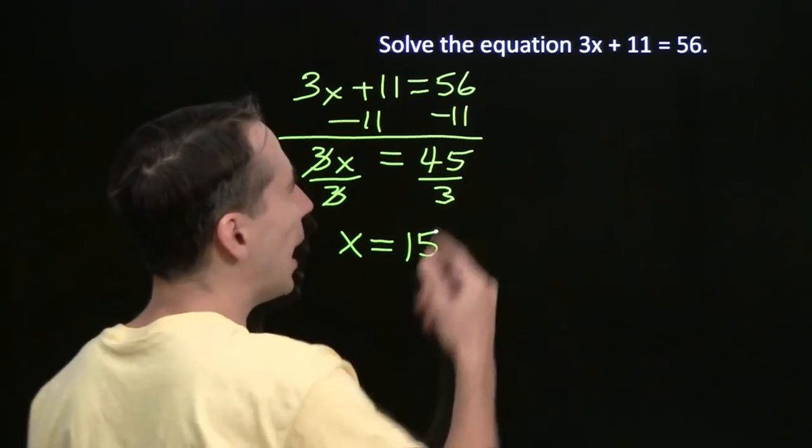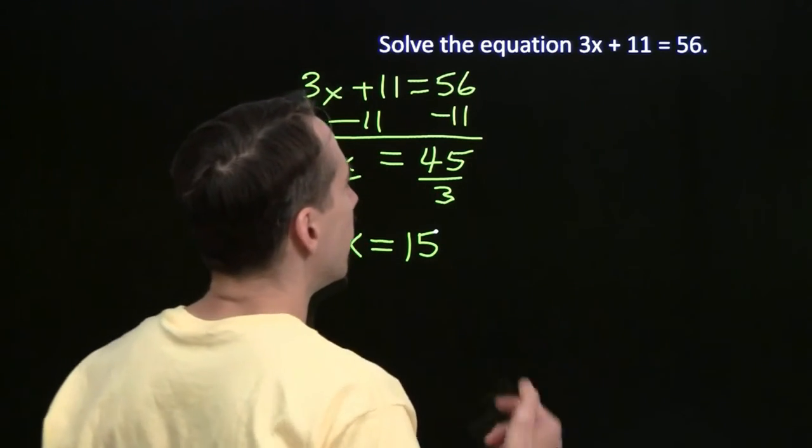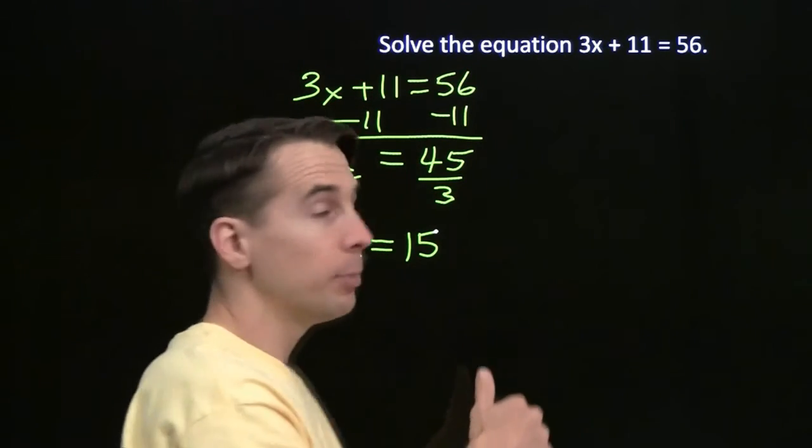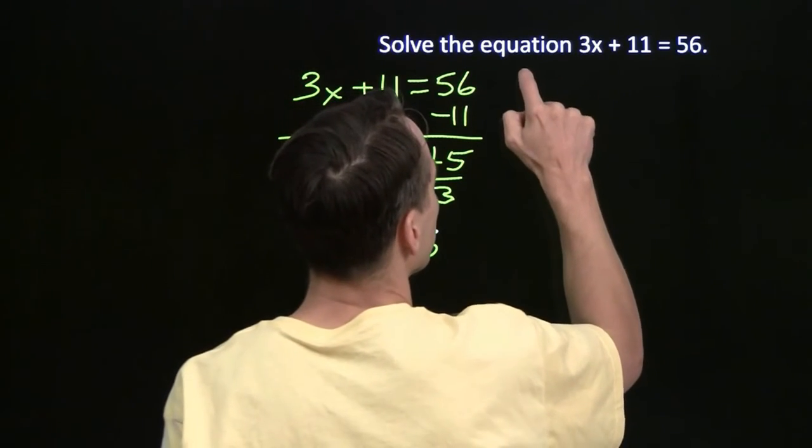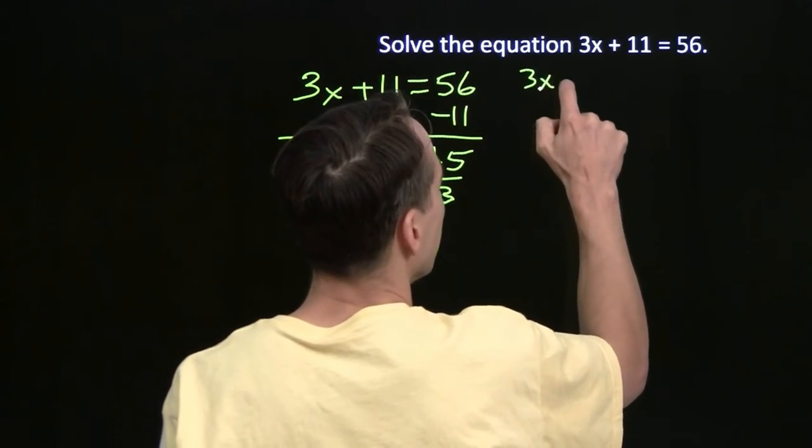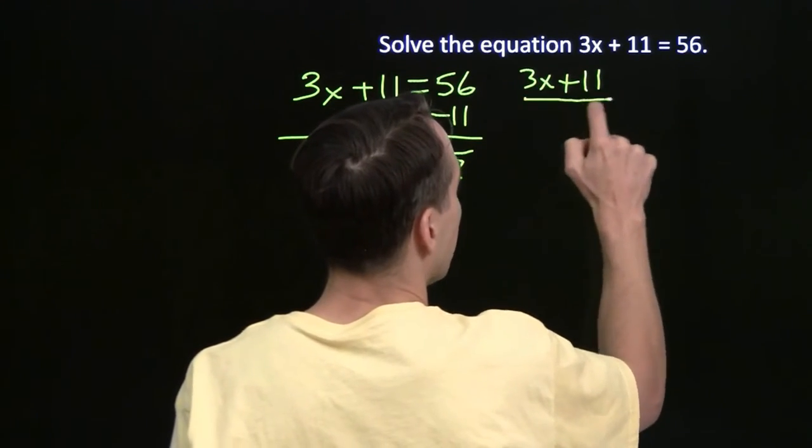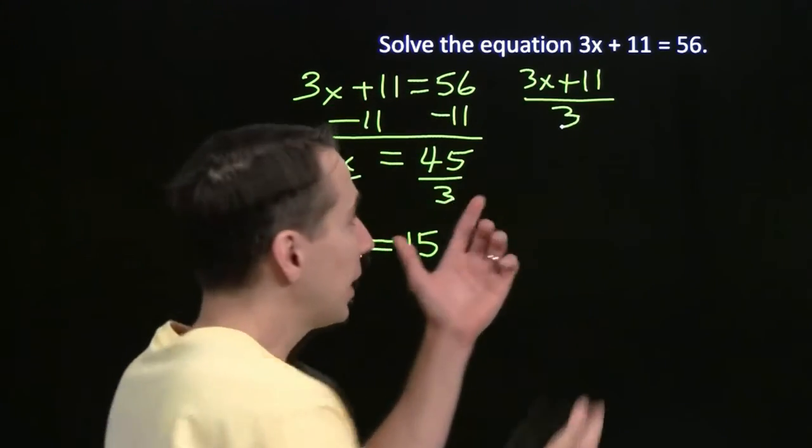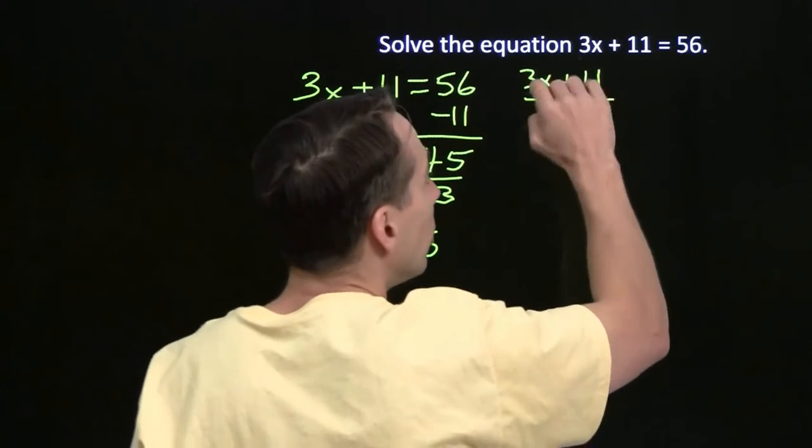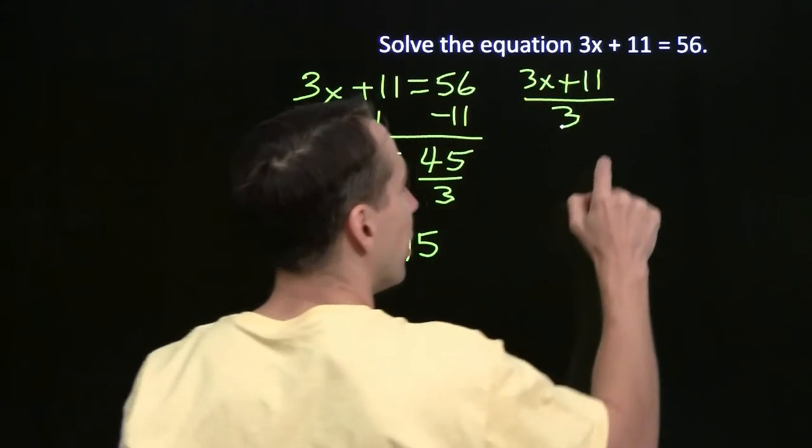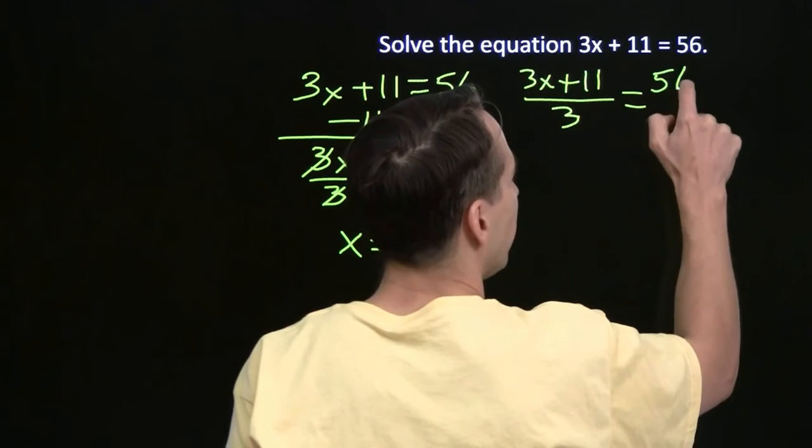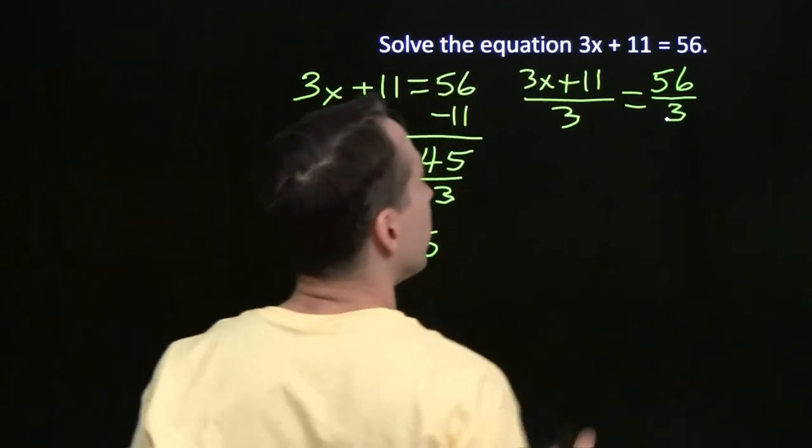Now, what would have happened if we'd gotten rid of the 3 first? Well, to get rid of the 3, we have to divide by 3 because x is multiplied by 3. So if we started off by dividing both sides by 3, and again, we have to divide the whole side by 3. We can't just divide one term by 3. We have to divide the entire 3x plus 11 by 3. Of course, that means we have to divide the right side by 3 as well. Can't play favorites.